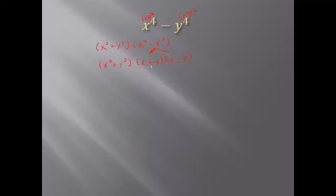You have to completely factor these problems, which means there may be more than one step. In this case, we have the difference of perfect squares again in the second binomial — subtraction, and x squared and y squared are both perfect squares. So I apply the difference of squares rule again: x squared minus y squared becomes x plus y times x minus y. The x squared plus y squared stays as is. We don't have any more differences of squares or common factors, so x squared plus y squared times x plus y times x minus y is the final answer. We used the difference of squares rule twice.